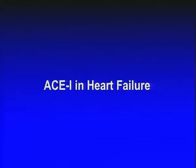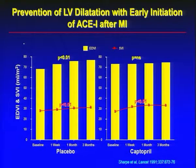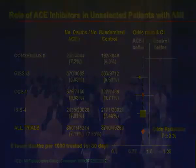Let's come to ACE inhibitors in heart failure. Over two decades ago it was shown that as compared to placebo when captopril was used, there was no increase in end diastolic volumes and stroke volume index and diastolic volume as compared to those who received placebo. The beneficial effect of captopril was shown long ago. And indeed several trials which appeared subsequently - GISSI-3, CCS-1, ISIS-4 and many others - have firmly established the role of ACE inhibitors in reducing mortality and morbidity.